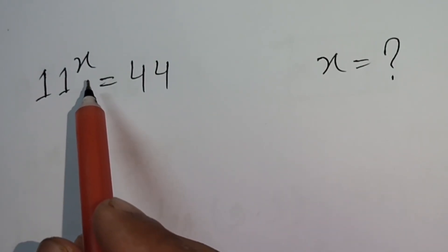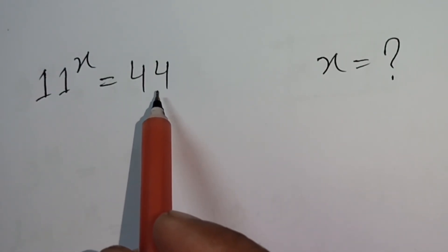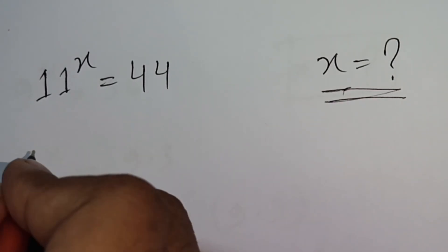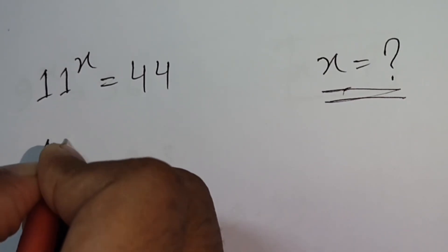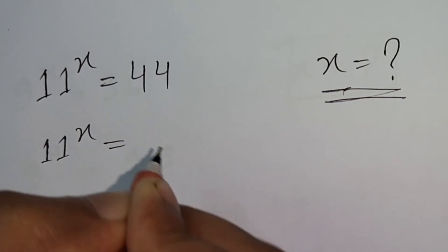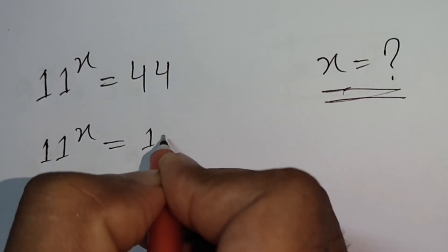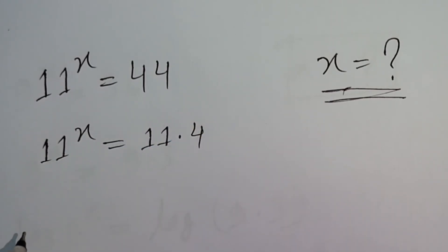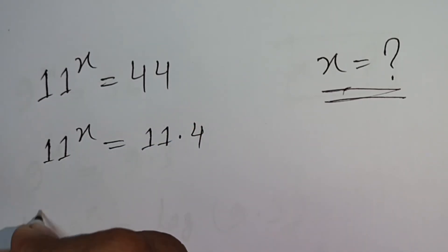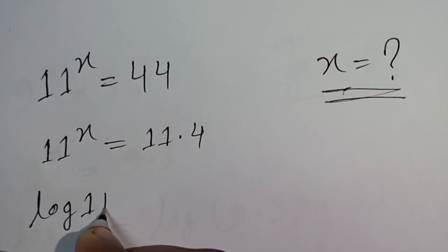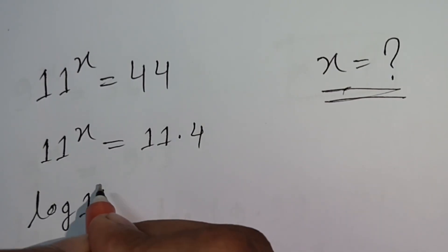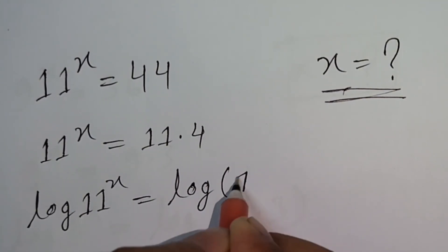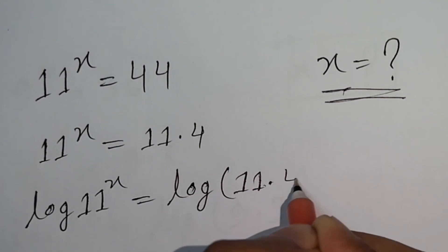11 to the power x is equal to 44. We need to find the value of x. First, 11 to the power x is equal to 11 times 4, which equals 44. Now take log of both sides: log of 11 to the power x is equal to log of 11 times 4.